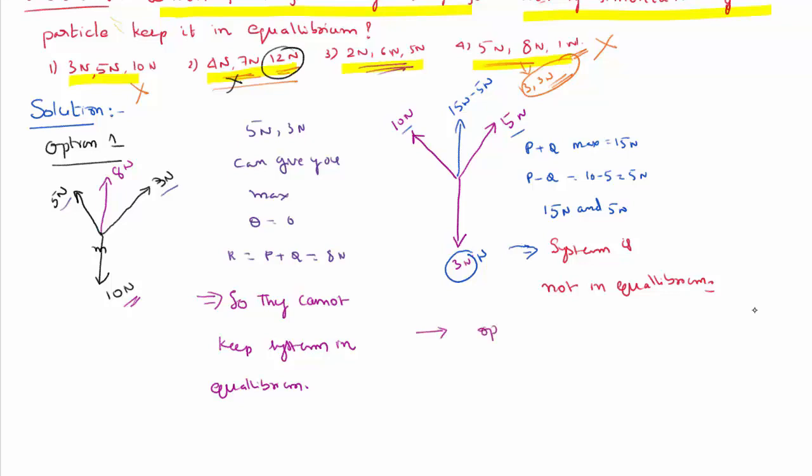Let us try to evaluate Option 3. There is 2 Newton here, 6 Newton here, another force acting on the body simultaneously is 5 Newton. When 2 and 6 are acting simultaneously, they can give you a maximum resultant between 2 plus 6, which is 8 Newton.